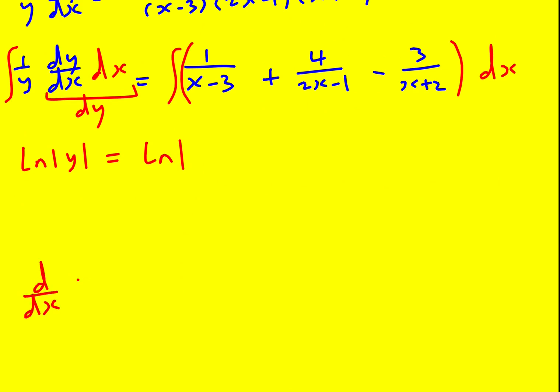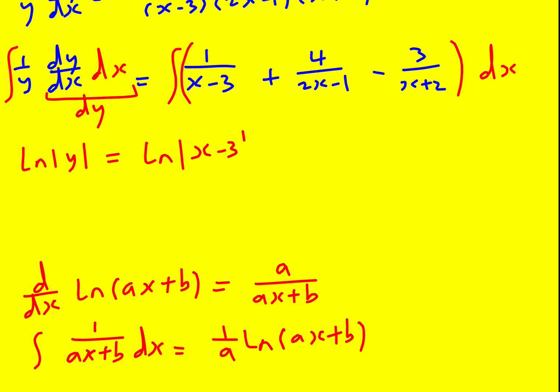d by dx of ln ax plus b is equal to, using the chain rule, a over ax plus b, which means when it comes to integrating 1 over ax plus b, we get ln ax plus b, but we need to divide by a instead. So using these ideas here, a is just 1 and b is minus 3, so we just get ln x minus 3, the modulus sign. This one's a bit tricky, I've got a 4 and a 2x minus 1, but I know I'm going to get ln 2x minus 1. And then actually, I'm going to differentiate it back. I would get 2 over 2x minus 1, so I need to put a 2 there.